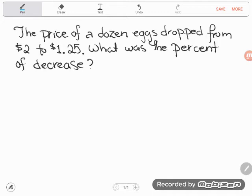It says the price of a dozen eggs dropped from $2 to $1.25. What was the percent of decrease? So this idea, percent of decrease, that's what they're asking us to find. Percent of decrease is a subcategory of a big idea known as percent change or percent of change.